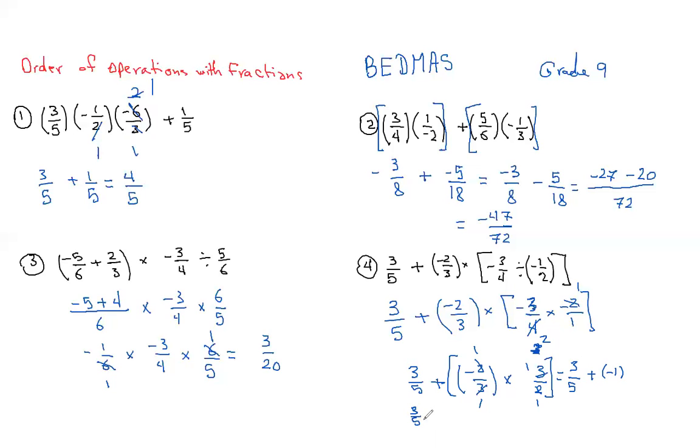I'm going to write 3/5 minus 1 over 1, because as I said earlier, when you have a plus and a minus right there in this format, you just change it into one sign, and it's going to be 3/5 minus 1 over 1.